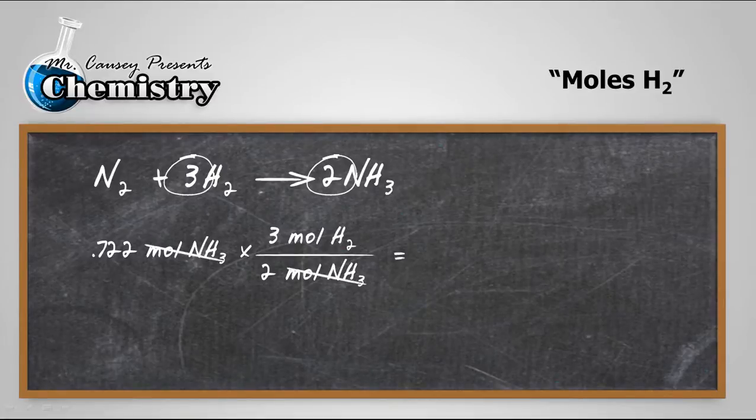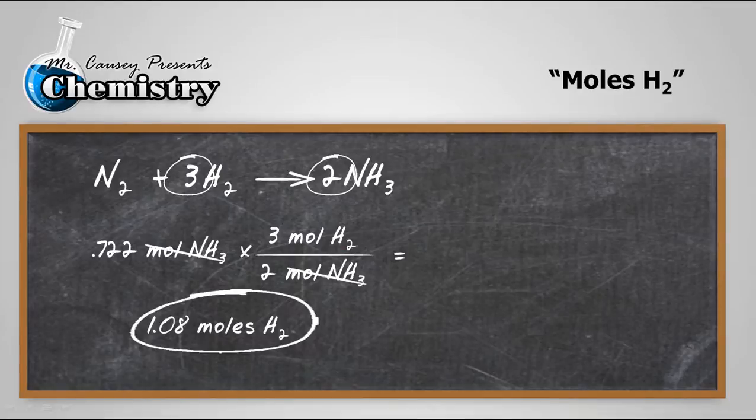A lot of times people ask me, how do I know which way to set it up? Well, what do I want to cancel out? I want the ammonia to cancel out. So, it's got to go in the bottom. Okay, use your algebra skills there. Plug and chug. And we get 1.08 moles of hydrogen. And when I look at the whole balanced equation, that makes sense. There should be more moles of hydrogen than moles of ammonia.